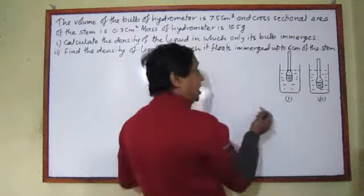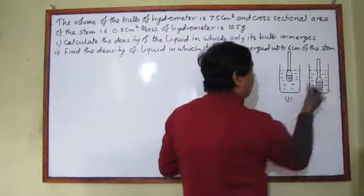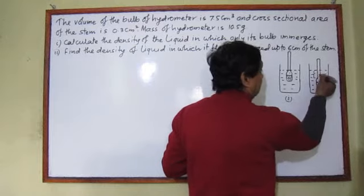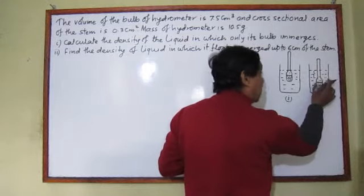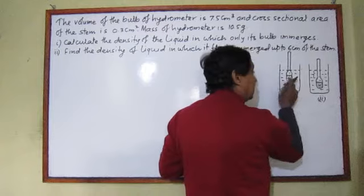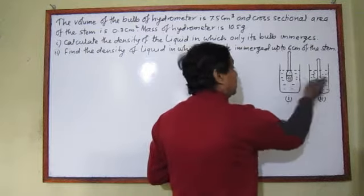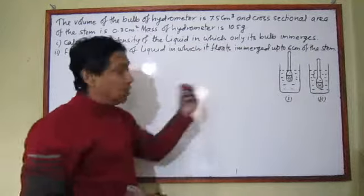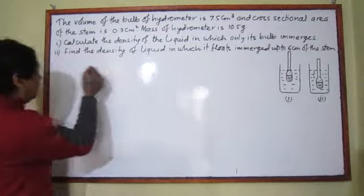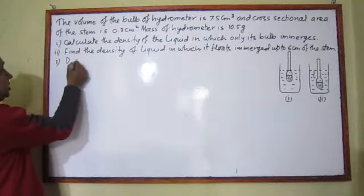In the second question, what is asked? There is another liquid — a second liquid — in which 6 cm of the stem is also immersed along with this bulb. The density of these two liquids is different, and finding the density of each liquid is the question. Now, I want to solve this. Let's say in question number 1, density is the question.